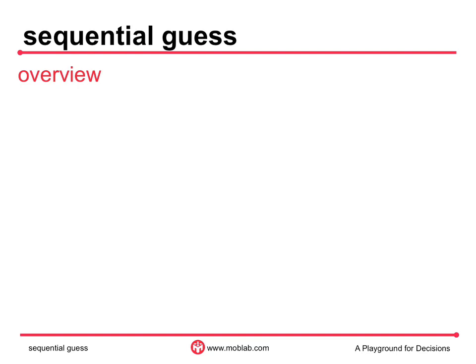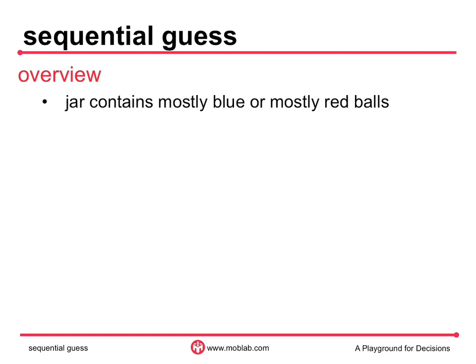Ladies and gentlemen, it is time for one of my favorites: the sequential guessing game. Each round, there is going to be a jar that contains only blue and red balls. Half of the time it contains mostly red balls, and half of the time it contains mostly blue. Your job is to guess whether, in the current round, it is mostly red or mostly blue.